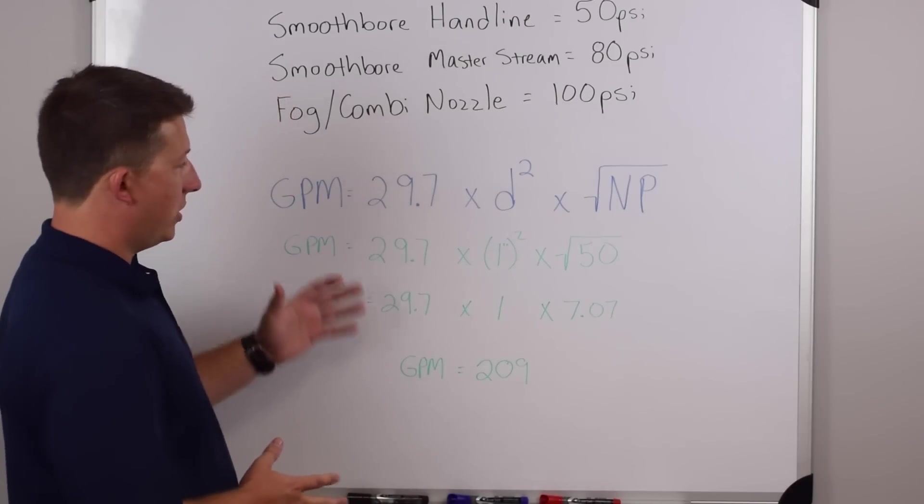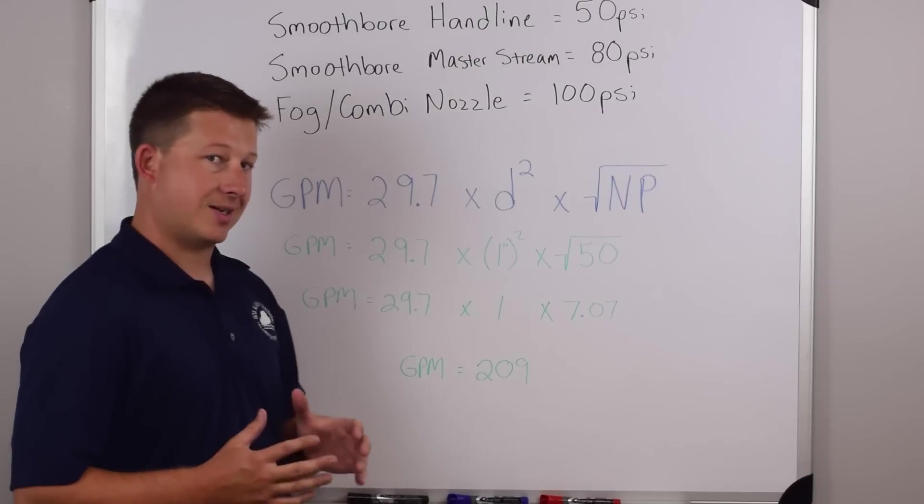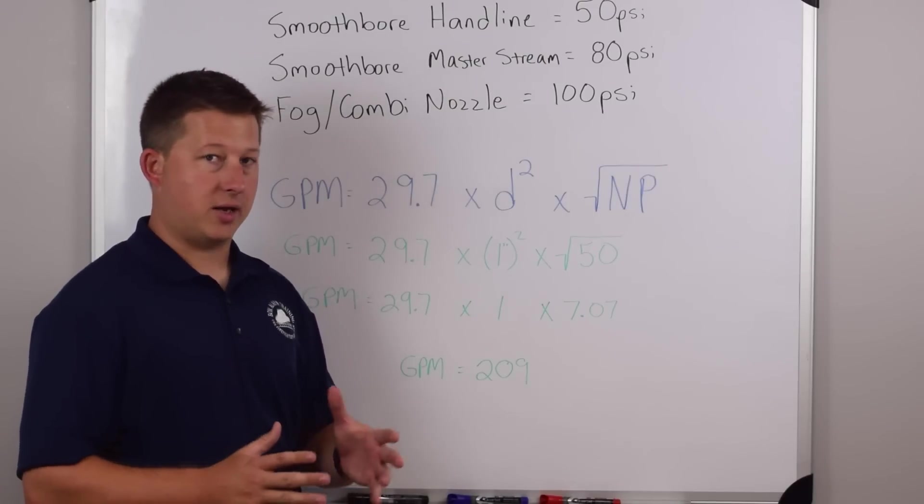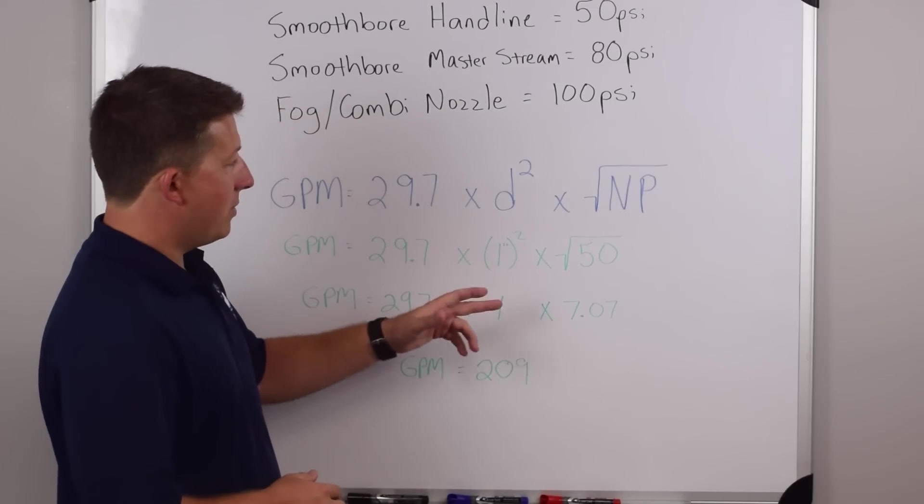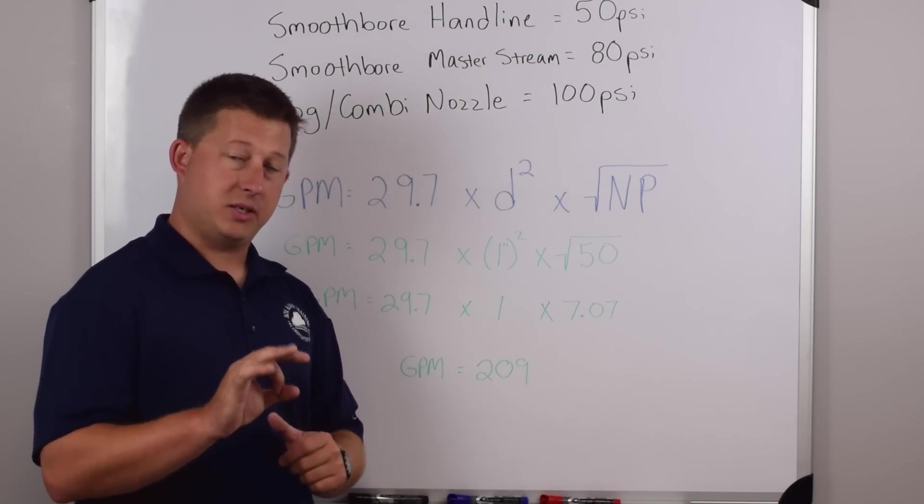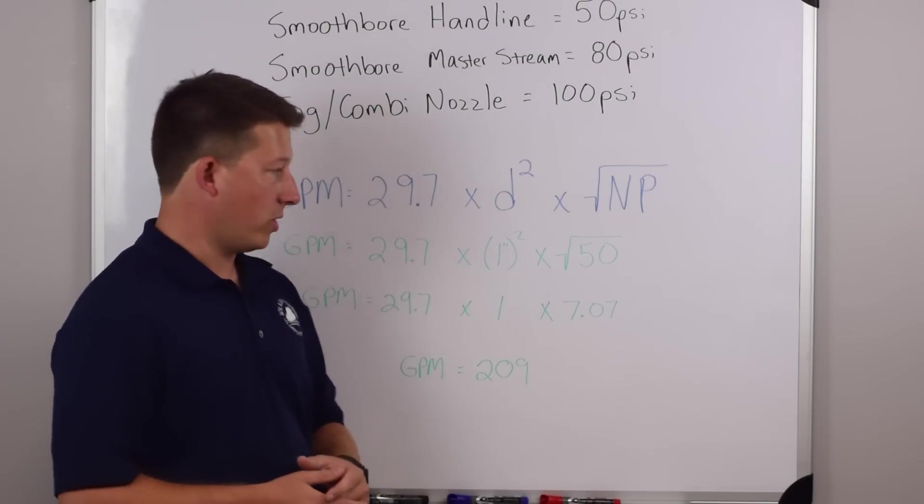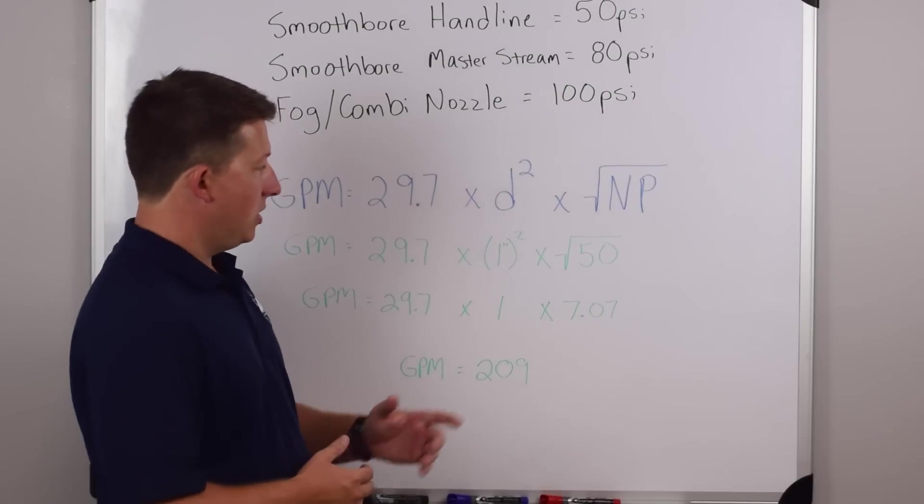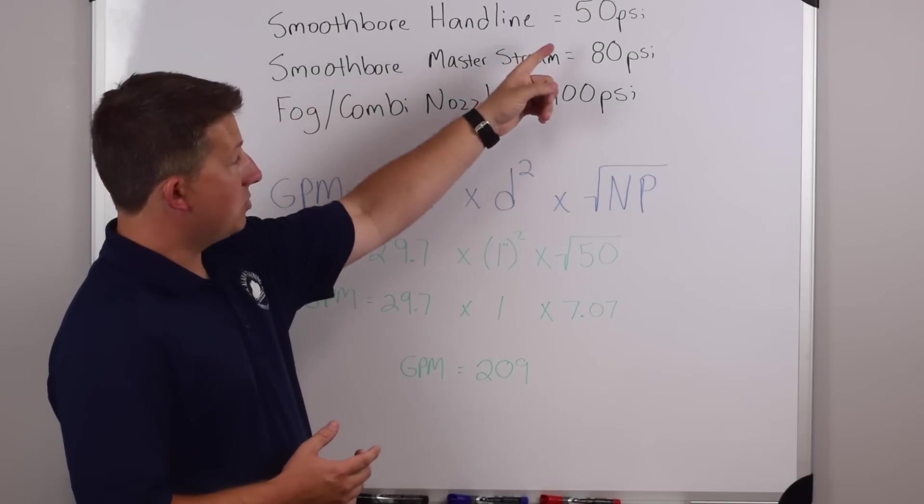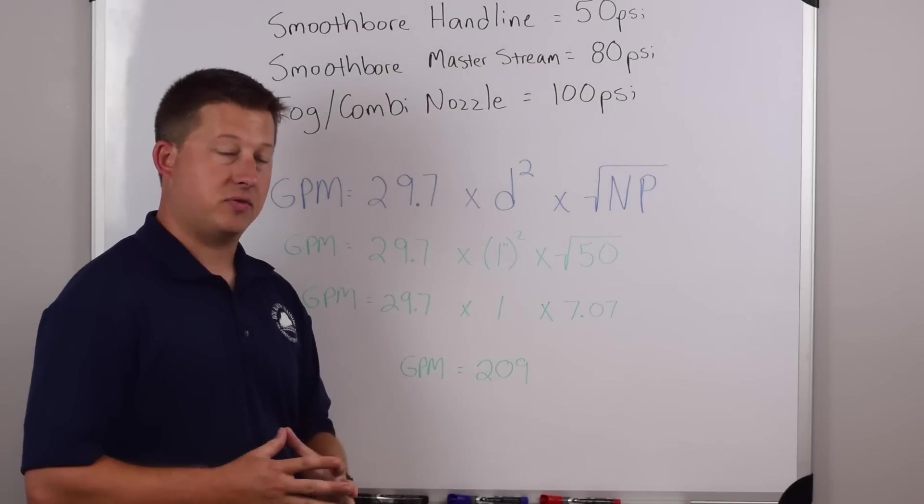So we plug in the numbers, the 29.7 is a constant number that we use on every single nozzle tip. We don't change that constant number. The diameter is going to be the size of the outlet or the tip size of the nozzle, the smoothbore nozzle. In this case, it's a one inch. The nozzle pressure is going to be 50 because it's a smoothbore hand line nozzle that operates at 50 PSI.